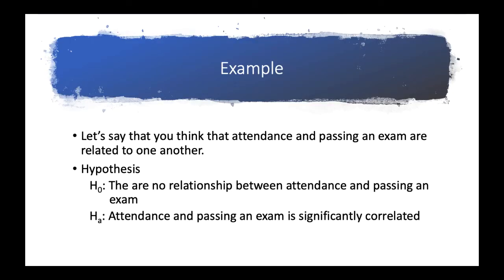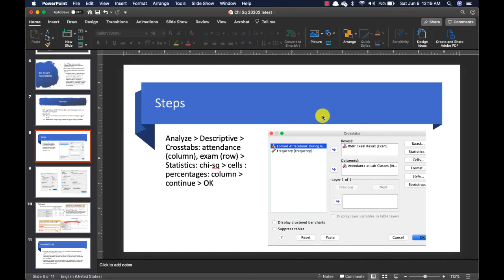Let's take a look at our example. Let's say you think that attendance and passing an exam are related to one another — based on your own observation. So your null hypothesis would be: there is no relationship between attendance and passing an exam. The alternative hypothesis is: attendance and passing an exam are significantly correlated. I have already uploaded the data on your Google Classroom — it's called the example chi-square data.